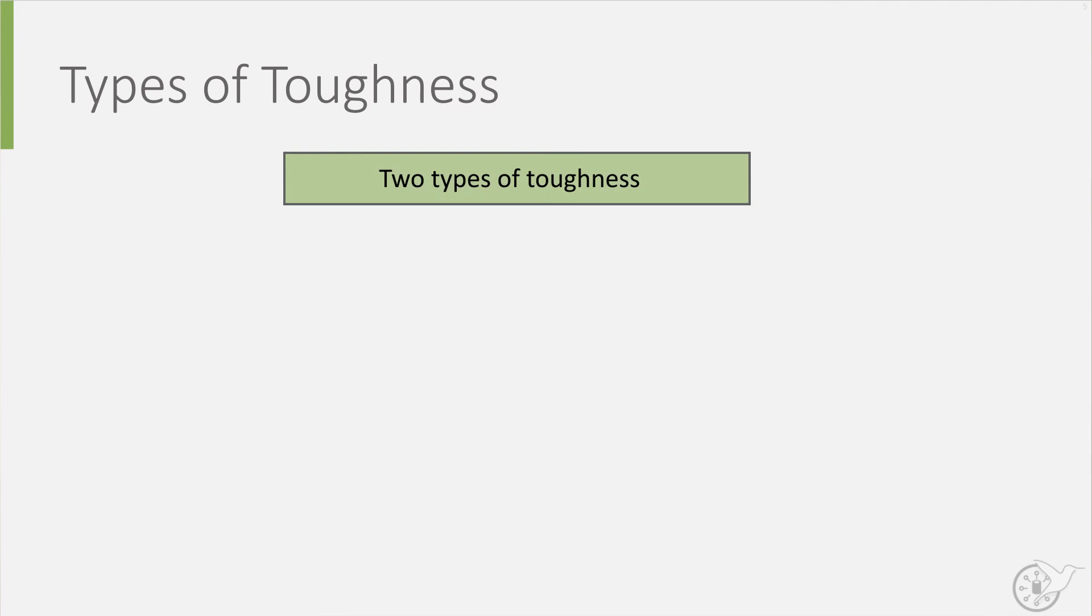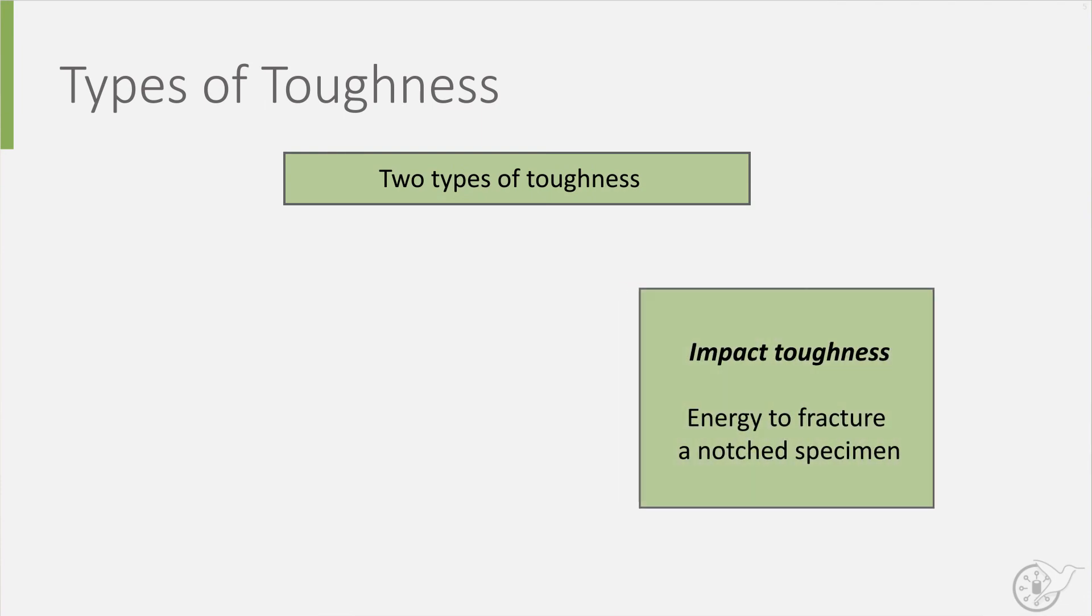There are different types of toughness depending on how a material breaks. I will discuss two types here. First, impact toughness, which is measured by carrying out a Charpy impact test. This involves having a swing hammer device hitting a notched specimen, and measuring the energy needed to break the specimen.